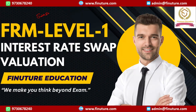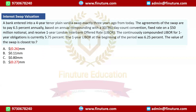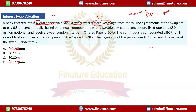This question was asked in one of the forums. A bank has entered into a four-year plain vanilla swap exactly three years ago. Total maturity is four years; remaining maturity is one year. The agreement is to pay 6.5% annually — note that as an outflow — based on annual compounding, on a notional of 50 million dollars.